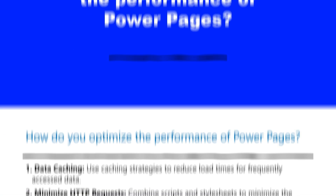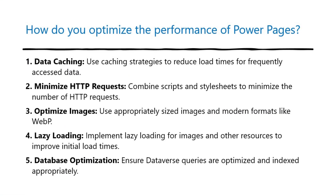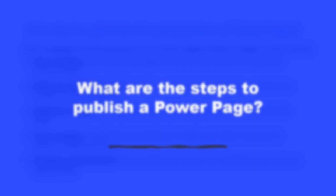How do you optimize the performance of Power Pages? One, data caching — use caching strategies to reduce load times for frequently accessed data. Two, minimize HTTP requests — combine scripts and style sheets to minimize the number of HTTP requests. Three, optimize images — use appropriately sized images and modern formats like WebP. Four, lazy loading — implement lazy loading for images and other resources to improve initial load times. Five, database optimization — ensure Dataverse queries are optimized and indexed appropriately.